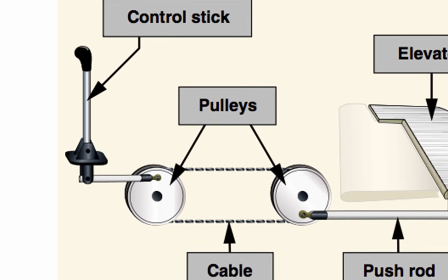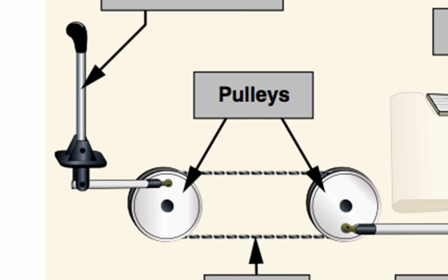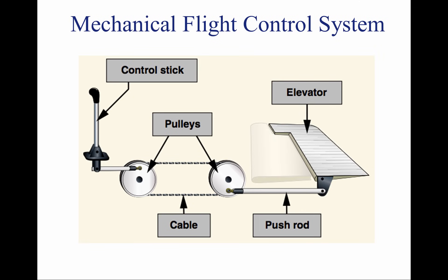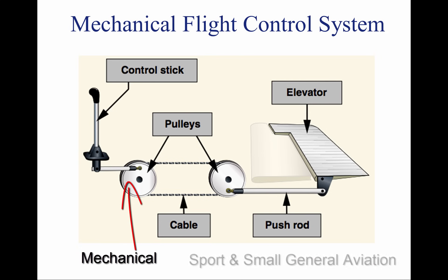Flight controls are what allow the pilot to control the forces of flight and the aircraft's direction and attitude. Different flight control systems exist for different types of aircraft. The most basic control systems are mechanical and date back to early aircraft. They are used today on sport and small general aviation aircraft, in which the aerodynamic forces are not excessive.